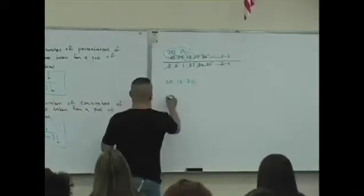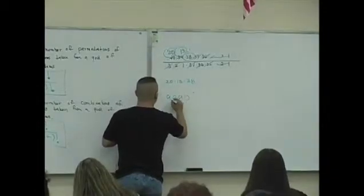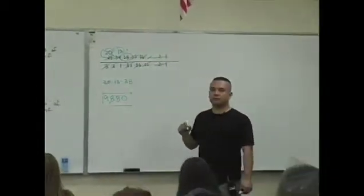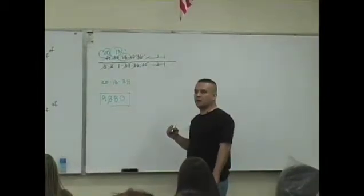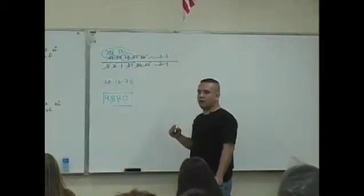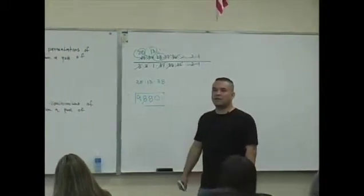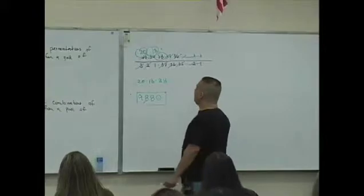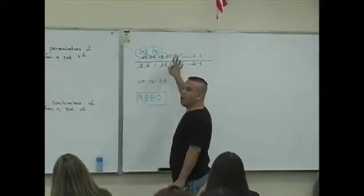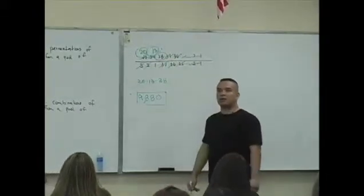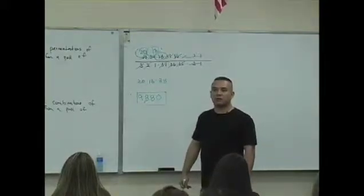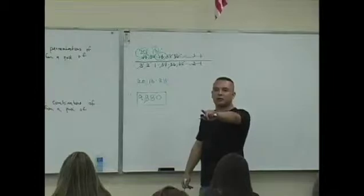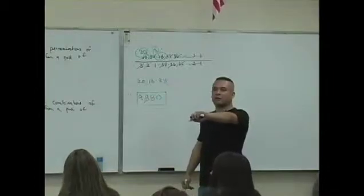So what's 20 times 13 times 38? Hold on. 9,000 what? 9,880. So the point is if you had to do this by hand, what's going to happen is even though there's these huge numbers, they all will cancel in some way. And you can actually deduce the answer.